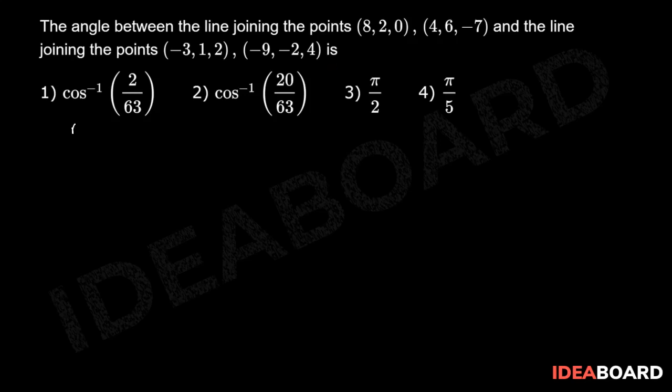Let A equals (8, 2, 0) and B equals (4, 6, -7) with the given points. Now direction ratios of AB are -4, 4, -7. Let us assume this as A1, B1, C1.